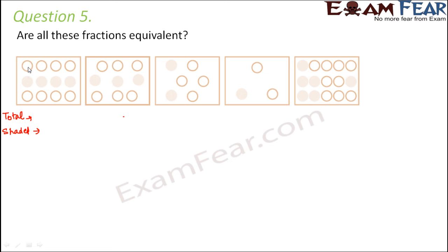So here, how many total circles? 1, 2, 3, 4, 5, 6, 7, 8, 9, 10, 11, 12 — and how many shaded? 4.